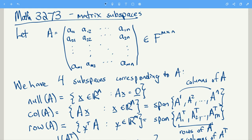So let's start out with an M by N matrix. Let's call it A. And the entries are in some field F, like maybe the real numbers or something. So each row has N entries, each column has M entries.